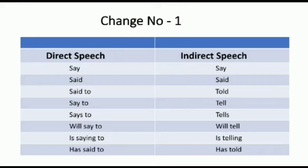Change number one - reporting verb का change: अगर direct speech में 'say' आए तो indirect में 'say' ही रहता है। लेकिन अगर 'said to' आए तो वो 'told' में change हो जाता है। इसी तरह 'say to' → 'tell', 'will say to' → 'will tell', 'is saying to' → 'is telling', 'has said to' → 'has told'। यह rule है - जब भी reporting verb के साथ 'to' लगा हो तो उसे 'tell/told' में बदल दो।